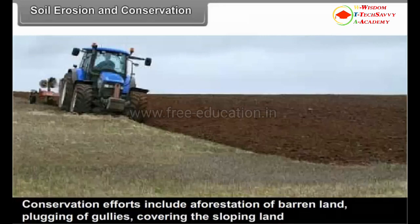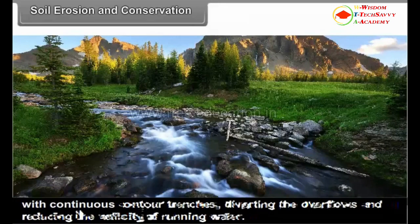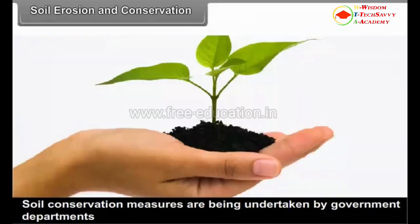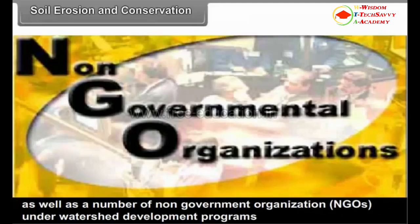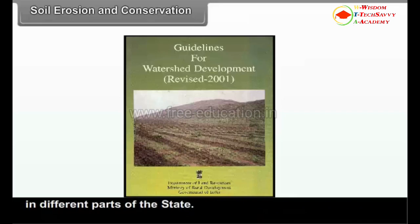Conservation efforts include afforestation of barren land, plugging of gullies, covering the sloping land with continuous contour trenches, diverting the overflows and reducing the velocity of running water. Soil conservation measures are being undertaken by government departments as well as a number of non-government organizations under watershed development programs in different parts of the state.